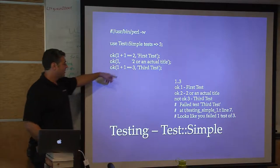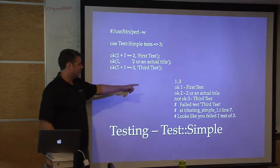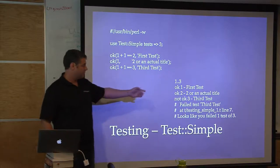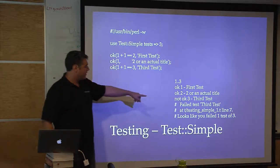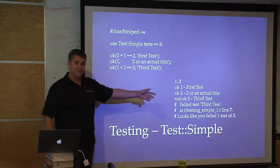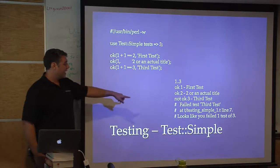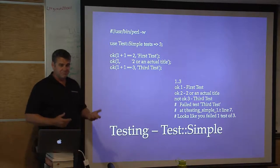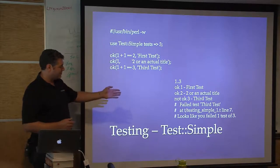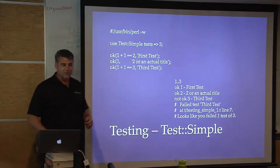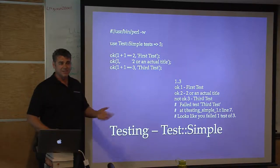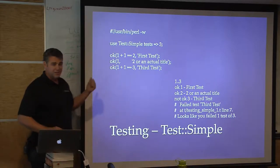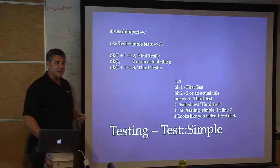With more descriptive names we get better TAP output. The third test is 'not ok' and it tells us 'failed test,' gives us the test number, the file name, and the line. But it still doesn't tell us what the test was actually testing or what went wrong — it just blew up. So time to jump in and put some debugging statements.